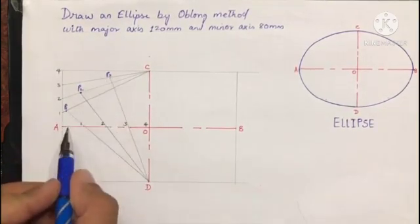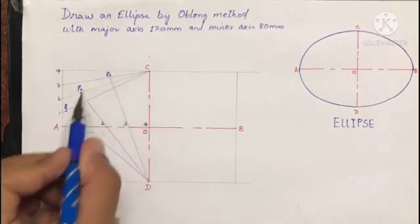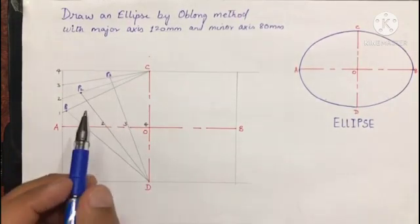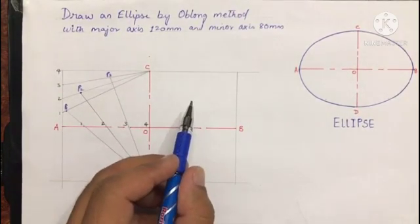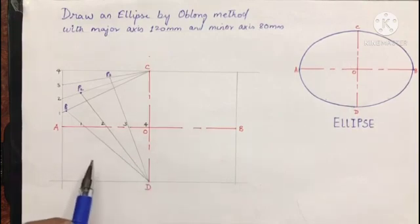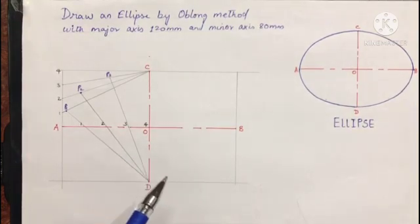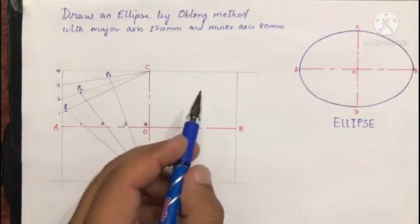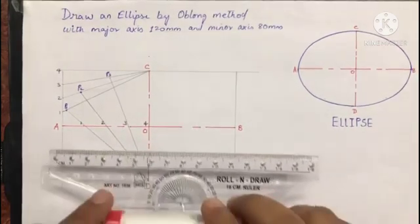As we have found these three points to get one quarter of ellipse, in a similar way we can use the same procedure in remaining three quarters, or we can just transfer these points.